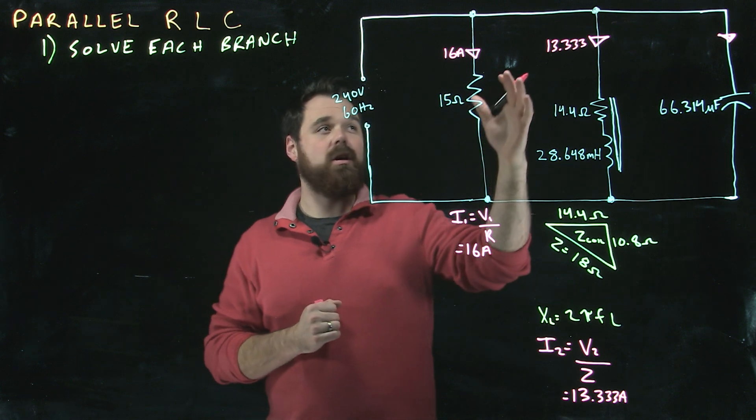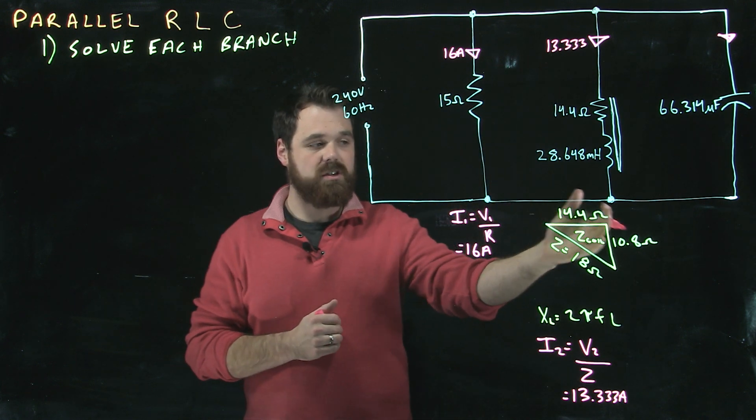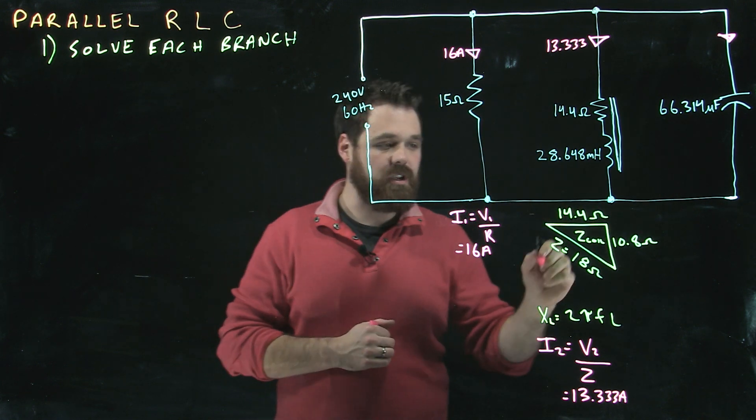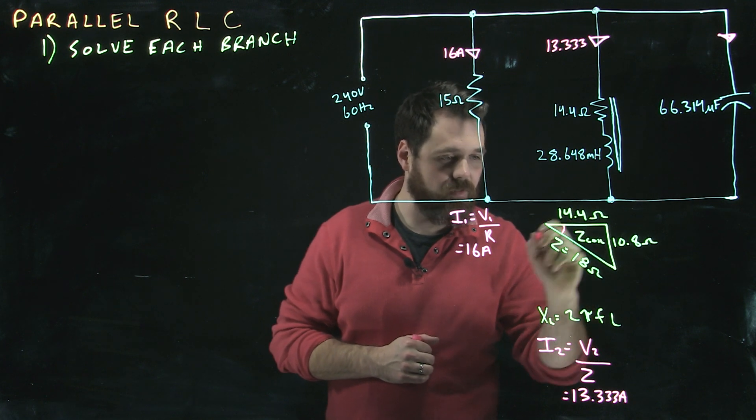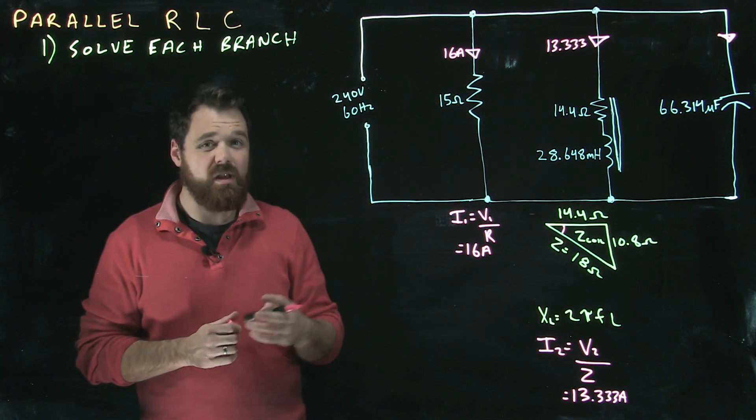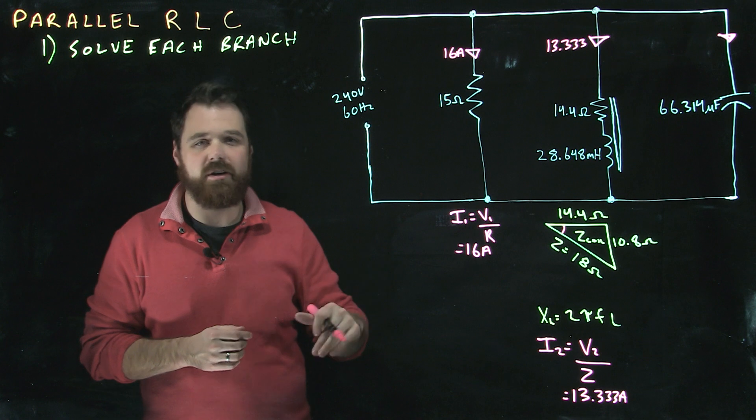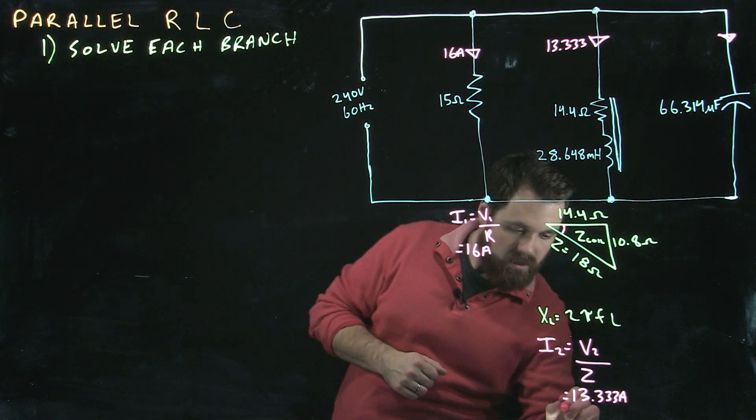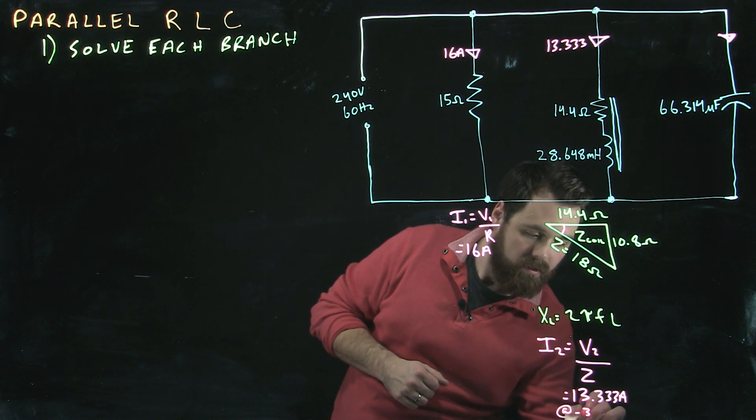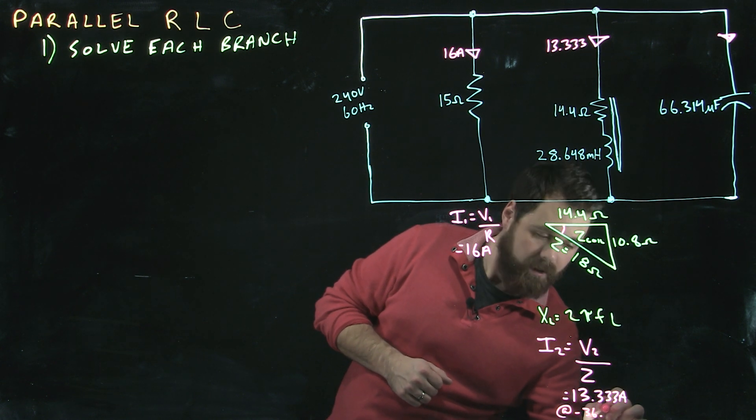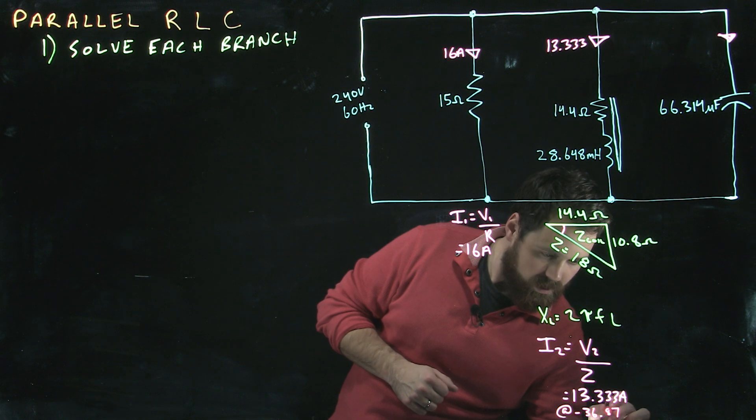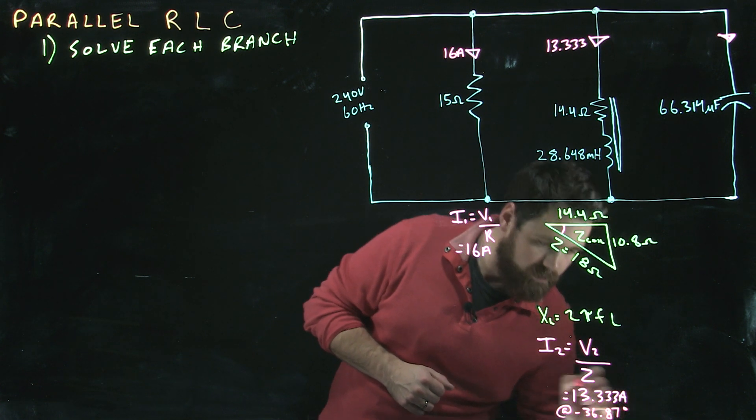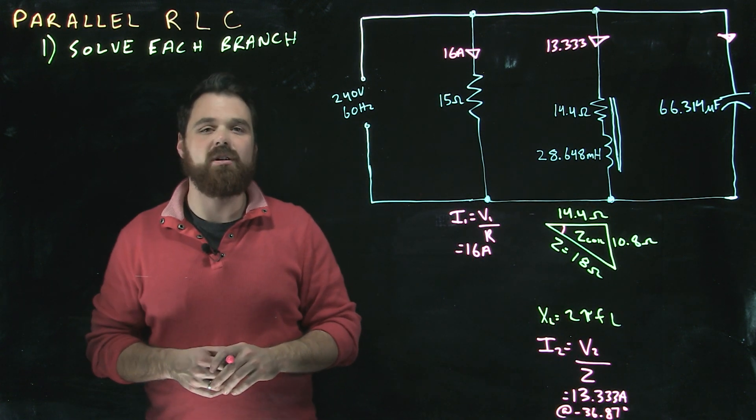Now, because our coil is resistive and inductive, we actually have an angle here for that branch of the circuit. We can solve that angle using SOHCAHTOA, you can figure out the power factor. What I've calculated it out to is negative 36.87 degrees. So that's the angle of the coil.